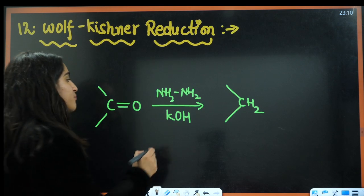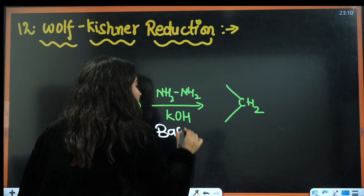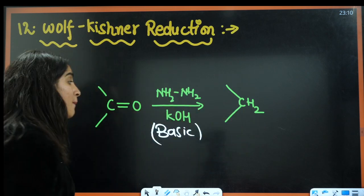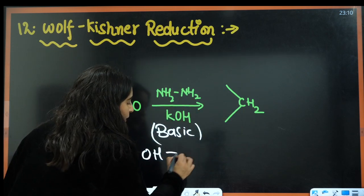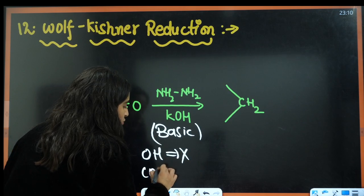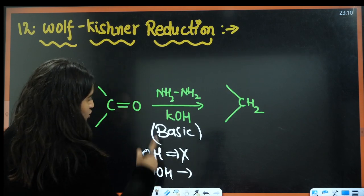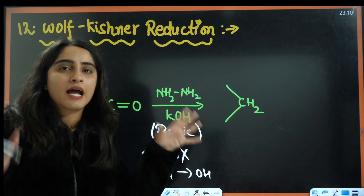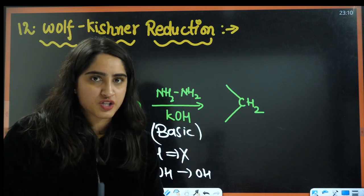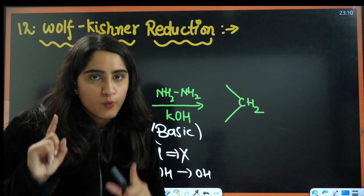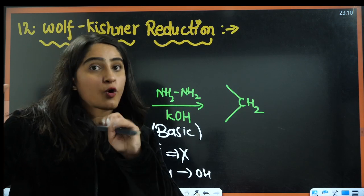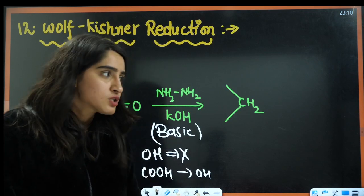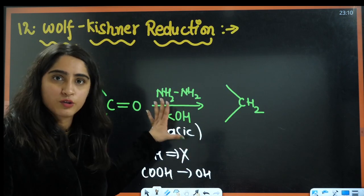In Wolff-Kishner reduction, we have basic conditions. Here the carbonyl group is also being reduced, but in this case the OH group will have no effect — it's the COOH group that gets converted. These are additional things asked in questions. For detail on these, I always recommend my detailed videos, one-shot videos, or live lectures.